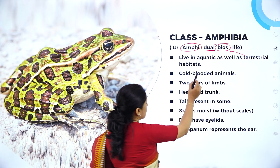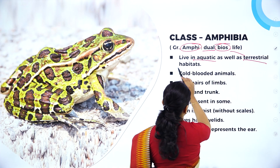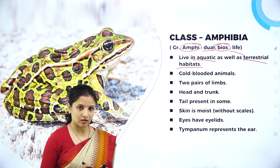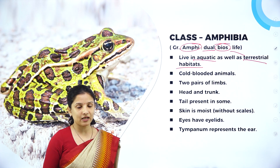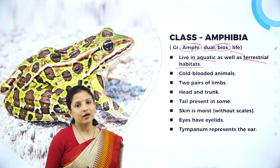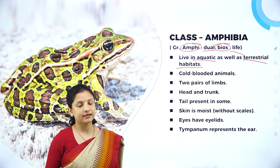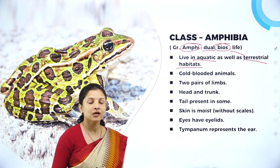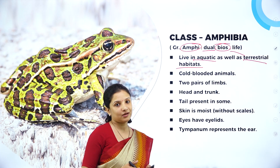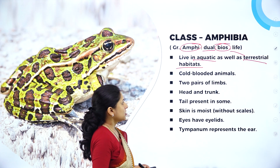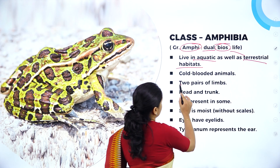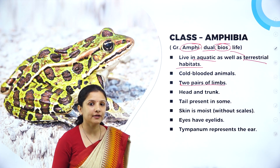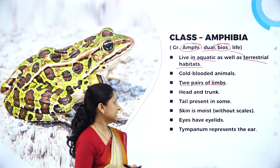They live in aquatic as well as terrestrial habitats. These animals are also cold-blooded animals, wherein they are not capable of regulating body temperature and their body temperature tends to vary according to the external temperature. They have two pairs of limbs — a pair of forelimbs and a pair of hindlimbs.